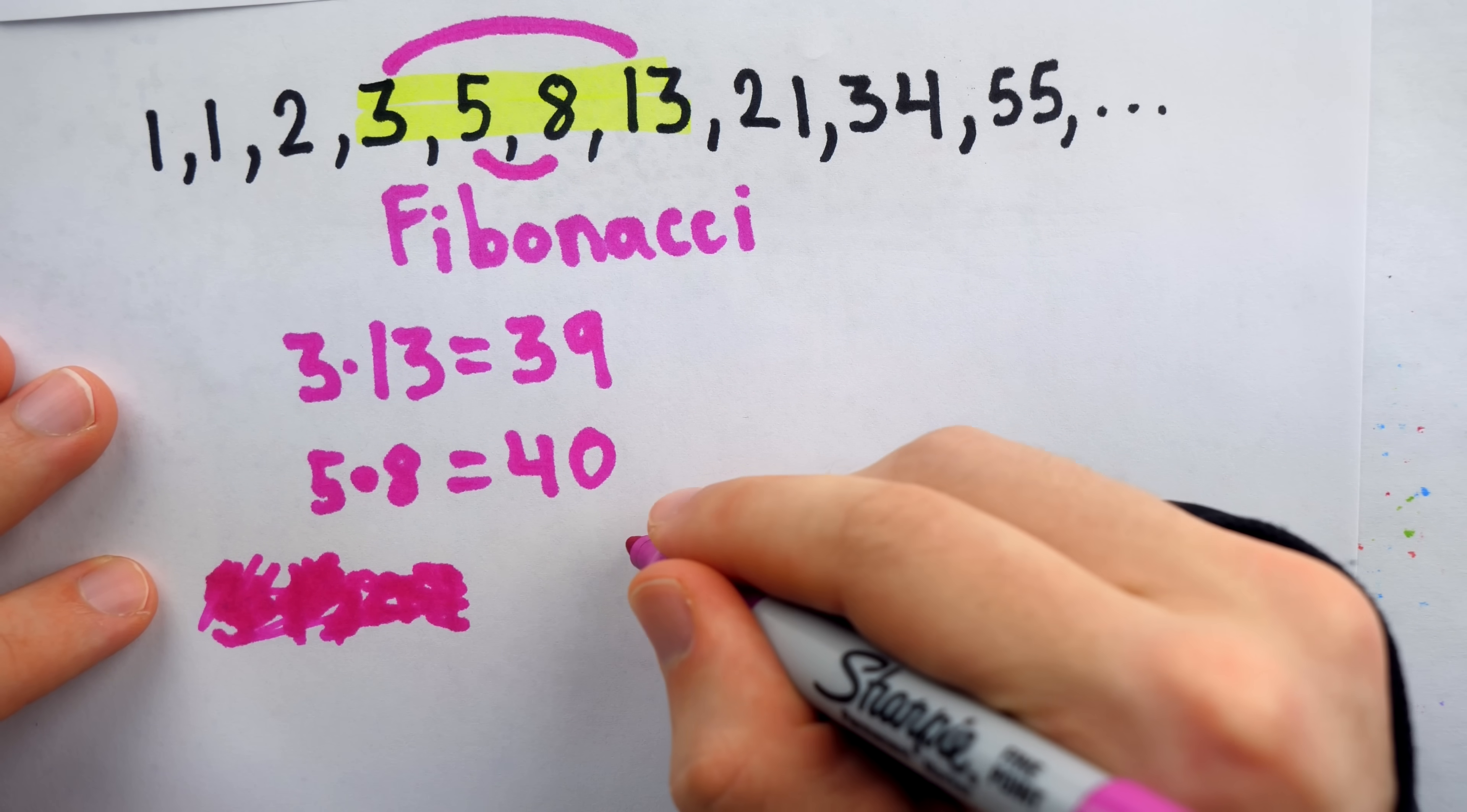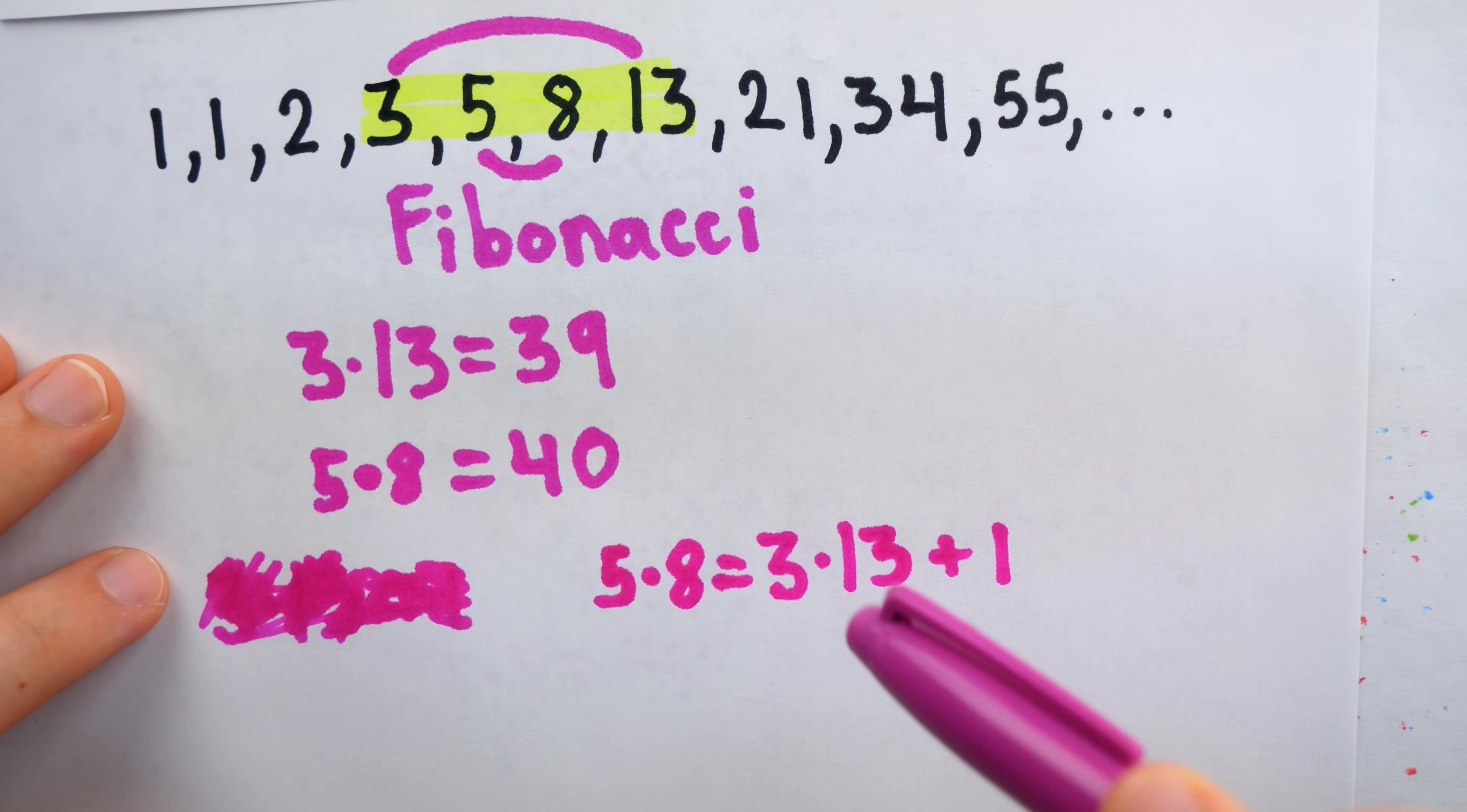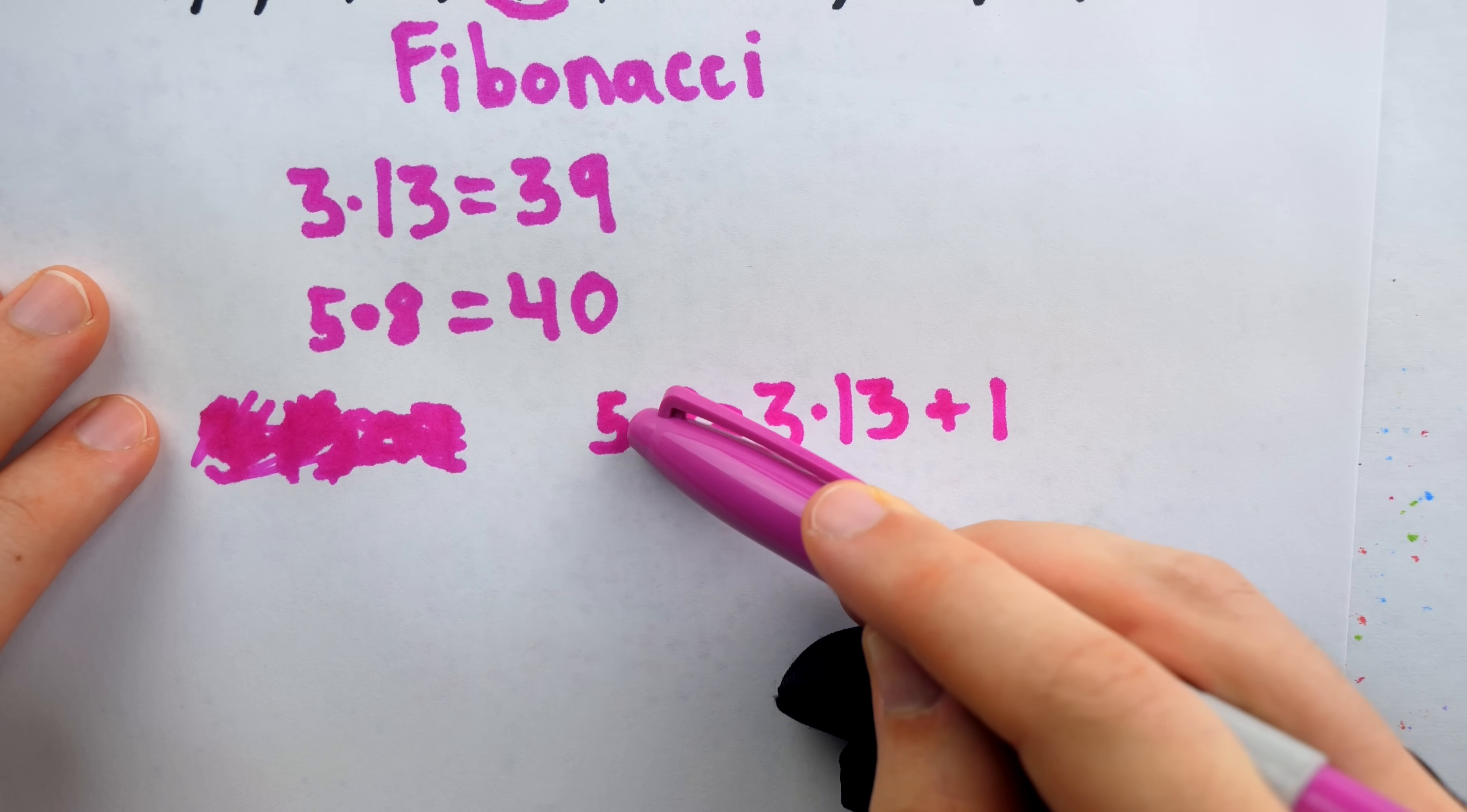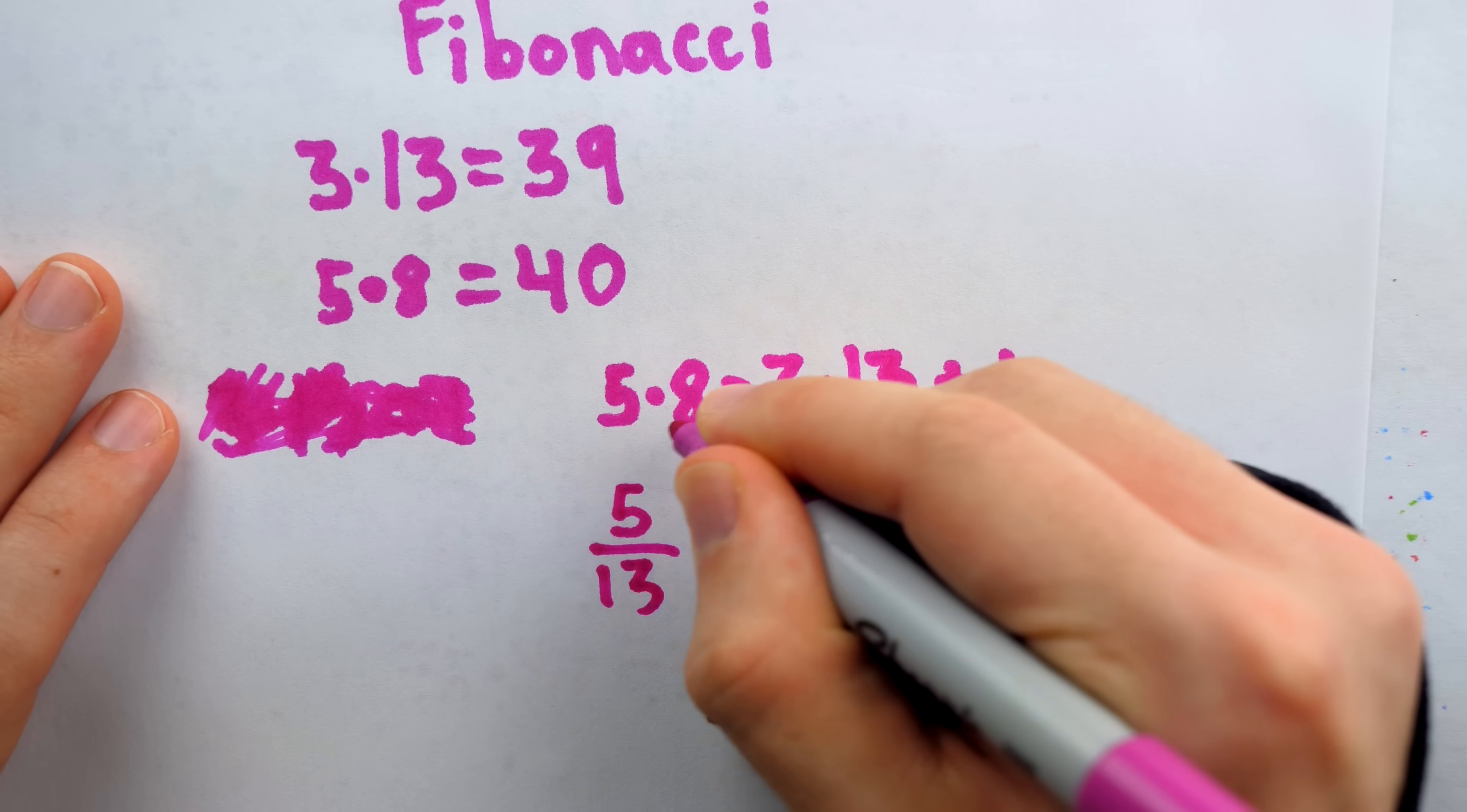Let's write out this equation, that 5 times 8 is equal to 3 times 13 plus 1. Now, to turn this into the comparison of slopes that we were doing before, we just have to do some division. Divide both sides by 8, and divide both sides by 13. Then on the left, we're going to have 5 divided by 13. The 8 was divided away.